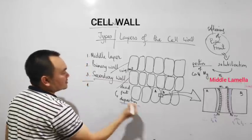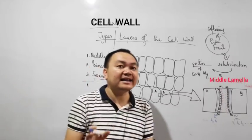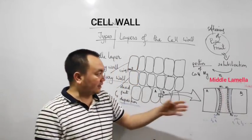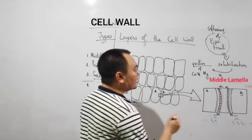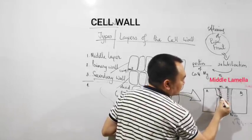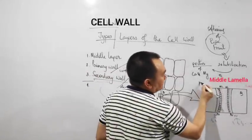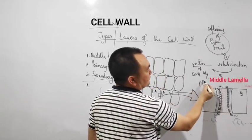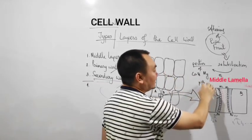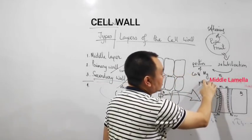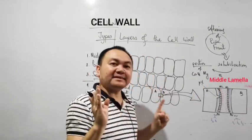So due to deposition of substances, the secondary wall is thick. And this thickness is uneven. Like at some point, at some part of the cell wall, there might not be any thickening, due to which it leaves a depression, which is called a pit.